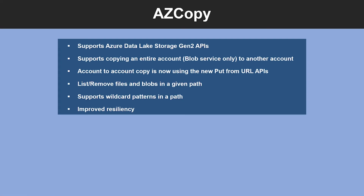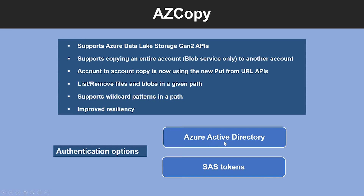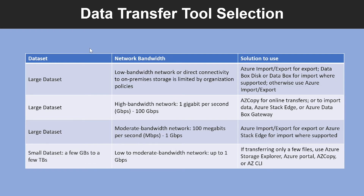An alternative method of transferring data is to use AzCopy. AzCopy version 10 is the next-generation command-line utility for copying data to and from Microsoft Azure Blob and file storage, offering a redesigned command-line interface and new architecture for high-performance, reliable data transfer. Using AzCopy, you can copy data between a file system and a storage account, or between Azure accounts. There are a couple of authentication options: you can either use Azure Active Directory or SAS tokens.